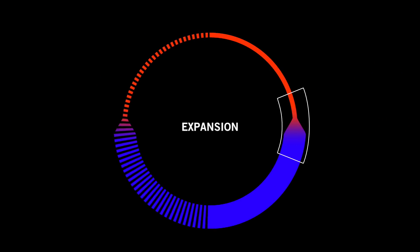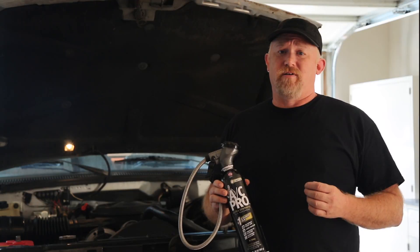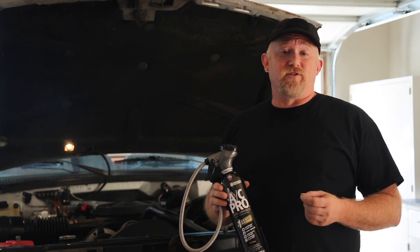The now liquid refrigerant then flows through high pressure tubing back towards your car's dash where it passes through a small valve. Depending on your car, this valve is called either a thermal expansion valve or an orifice tube.